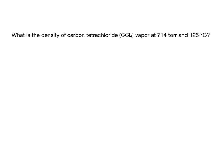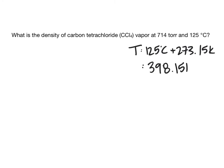What is the density of carbon tetrachloride vapor at 714 torr and 125 degrees Celsius? The temperature is 125 degrees Celsius plus 273.15, which gives us 398.15 Kelvin.